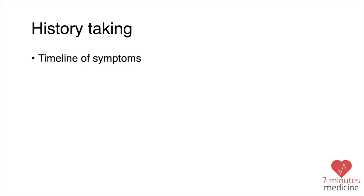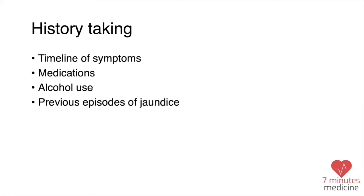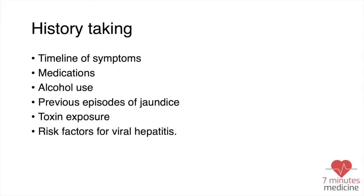For history taking, we have to ask about the timeline of the symptoms. We have to ask about medication history to see if any medication is contributing to the liver disease. We should ask about alcohol use and quantify it as much as we can. We also have to ask about any previous episodes of jaundice, any toxin exposure, and risk factors for viral hepatitis.